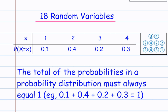The total of the probabilities in a probability distribution must always equal 1. So you can see if I add together 0.1, 0.4, 0.2, and 0.3, that will be equal to 1.